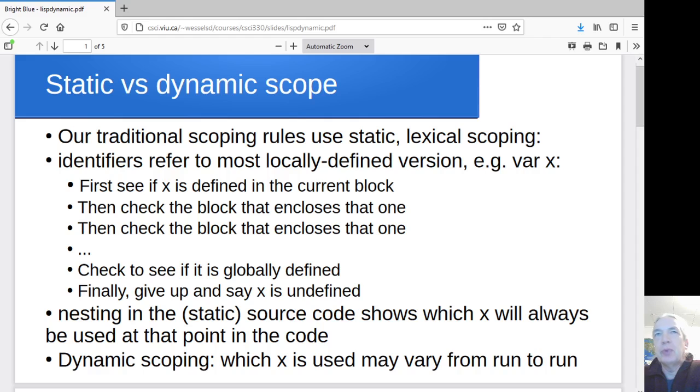So what we're used to in languages like C and C++ and Java is called static scoping, where you can look at the source code and the structure of the source code tells you which variables are accessible at which points in the program.